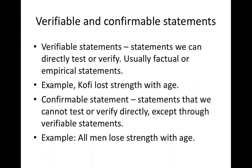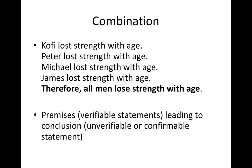But we have confirmable statements — statements that we cannot test or verify directly except through verifiable statements. Example: all men lose strength with age. You can't verify it directly. So look at this combination: you have premises that are verifiable statements and then you have a conclusion that is a confirmable statement. Kofi lost strength with age, Ritter lost strength with age, and so on. Therefore, all men lose strength with age. So the premises are verifiable statements; the conclusion is a confirmable statement.